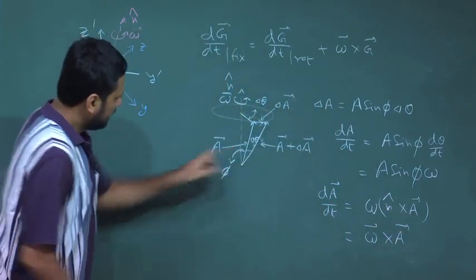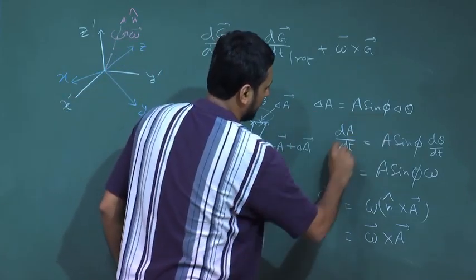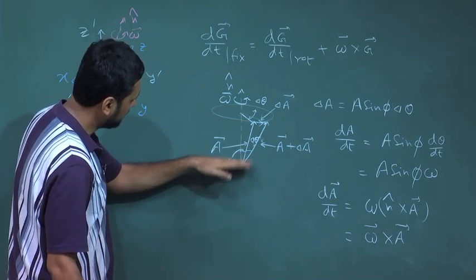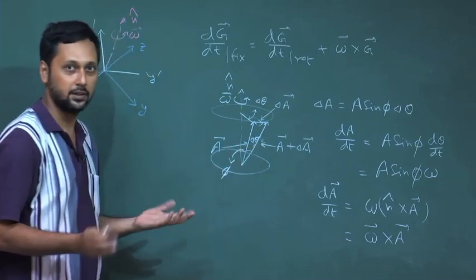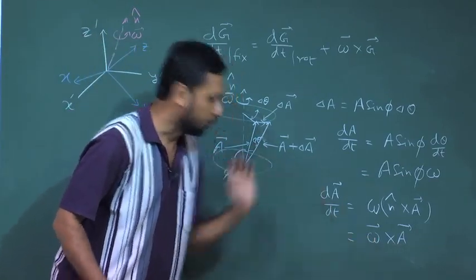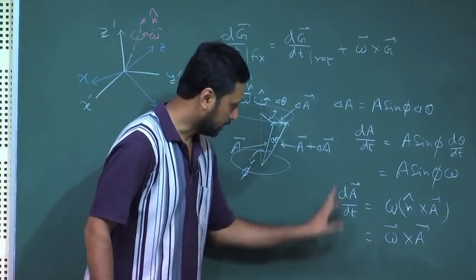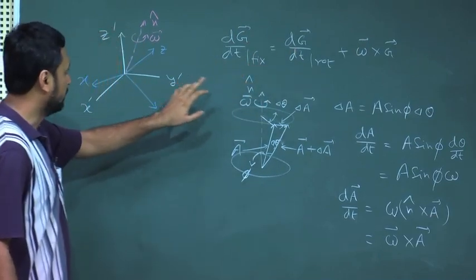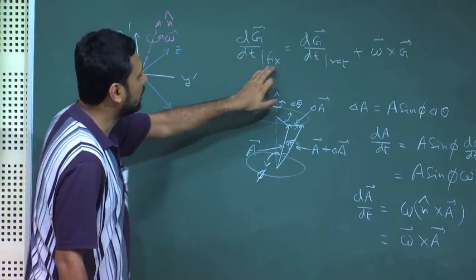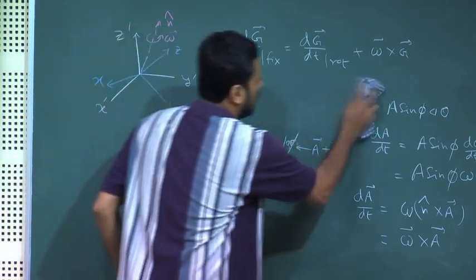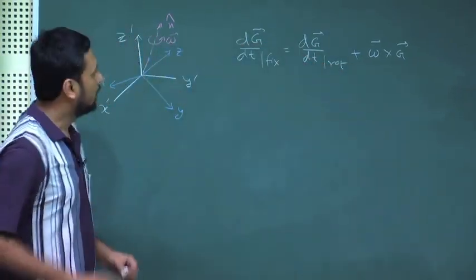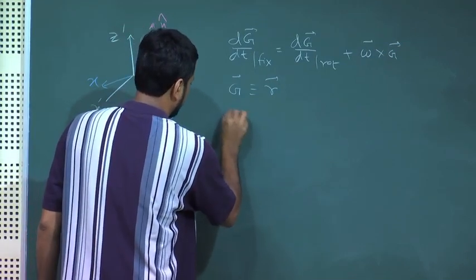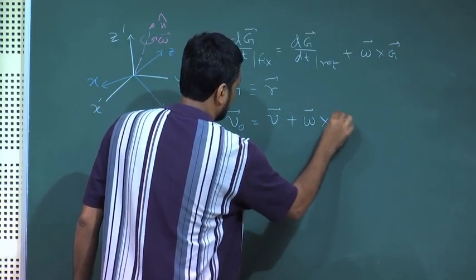So either we can directly take the angle delta theta and compute delta a equals a delta a and show that da/dt equals omega cross a, or we can take the 2D projection and again prove da/dt equals omega cross a. Using this important result, for any vector g moving in either the fixed or rotating coordinate system, we replace g with r and show that v0 equals v plus omega cross r.